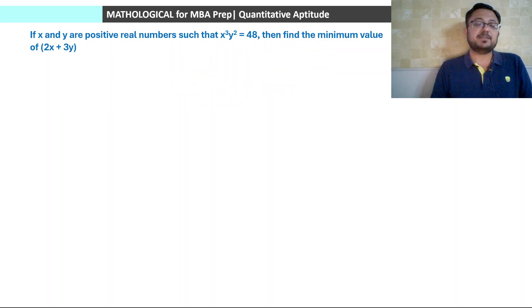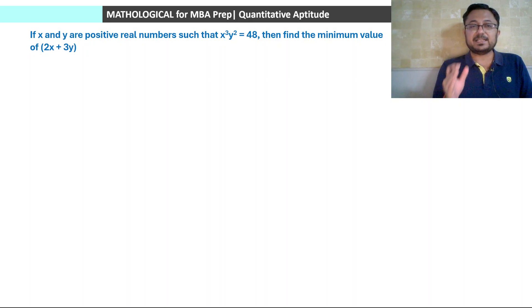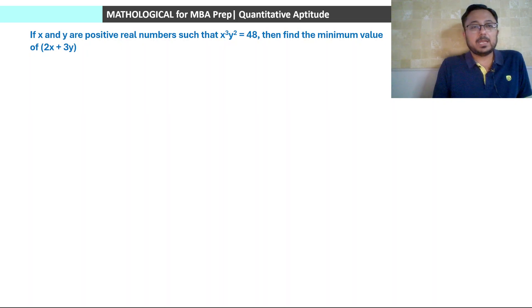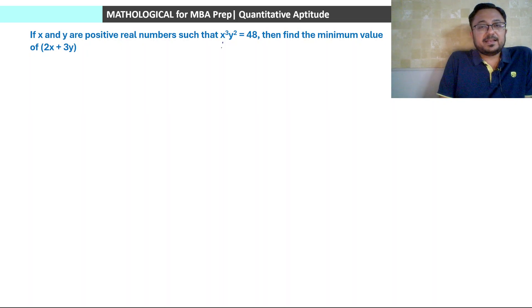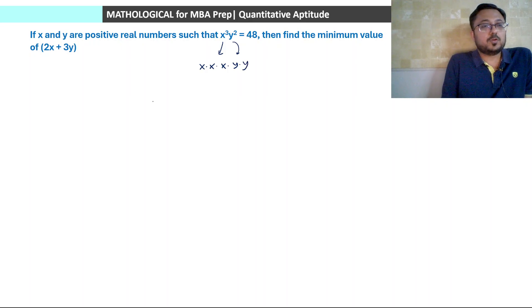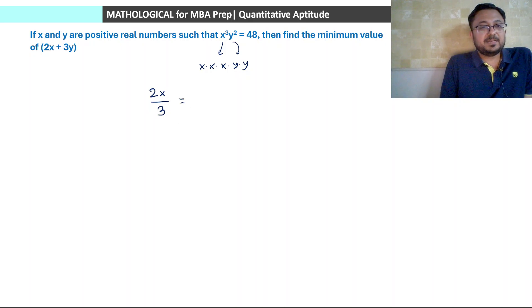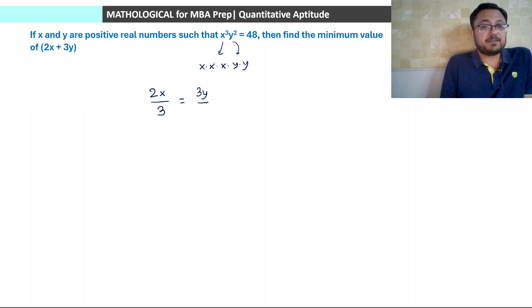Next question: if x and y are positive real numbers such that x³ into y² equals 48, find the minimum value of 2x plus 3y. Since x has power 3, we break 2x into 3 parts giving 2x by 3 each. Since y has power 2, we break 3y into 2 parts giving 3y by 2 each.